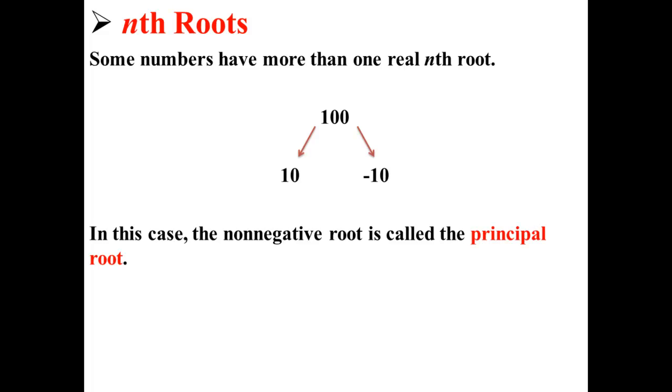In this case, the non-negative root is called the principal root. When no index is given, a radical sign indicates the principal root. So for example, if we take the square root of 100, we're talking about its principal root, which is 10.